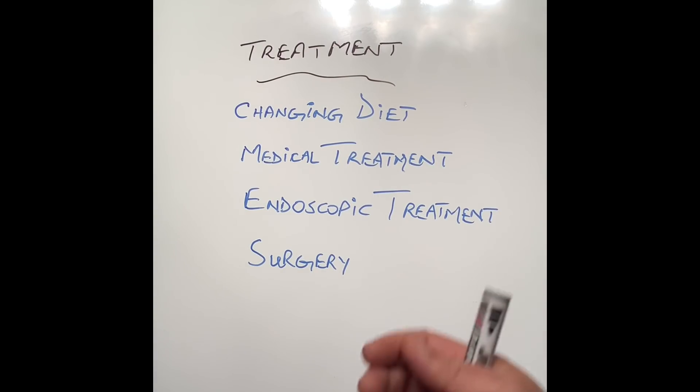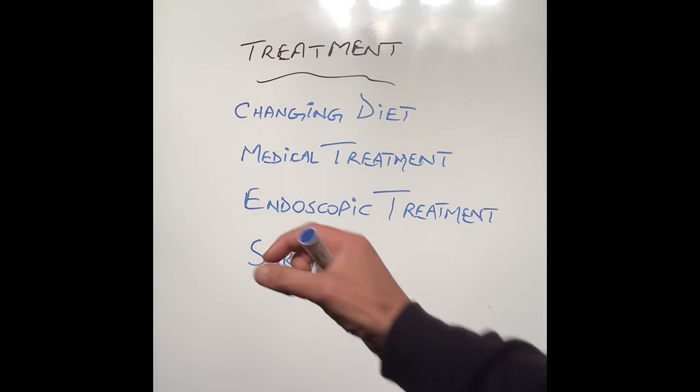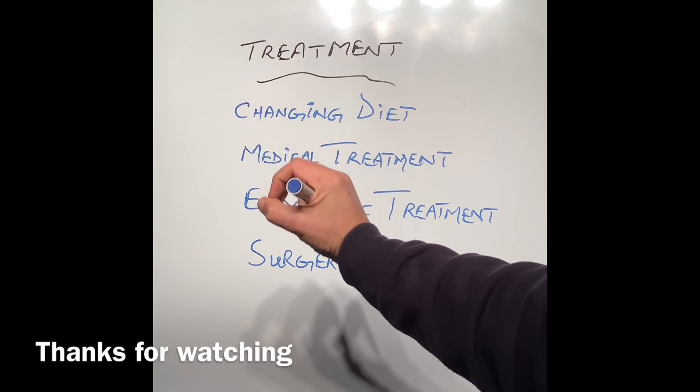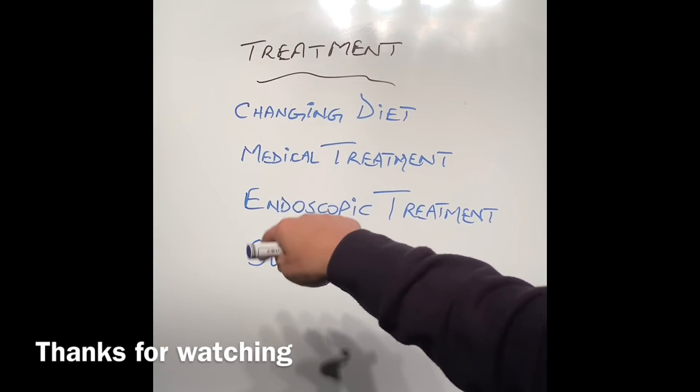Surgery is also limited to achalasia patients, in which the surgeon cuts the muscle of the lower esophagus. They cannot bring the nerves back which are not present. However, to release the pressure at the bottom end, they cut the muscle open so the esophagus becomes loose and things start going through a bit easier. Not a perfect treatment, however it does improve the patient's symptoms.